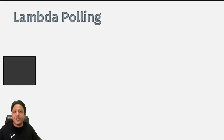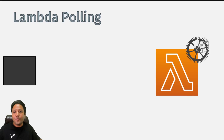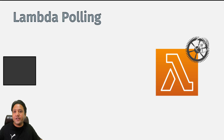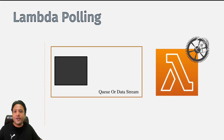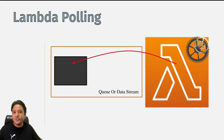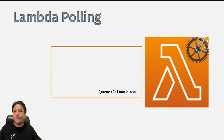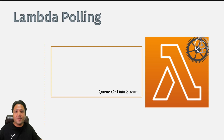In the case of Lambda polling, let's say we have data — it can be a single data or a batch of data — and we want Lambda to process this data. Because the data is going to be in continuous format, it is either going to go to a queue or it will be part of a data stream. Lambda internally is going to continuously pull this queue or data stream, and whenever data arrives Lambda is going to process it. This is why this method of invocation is known as Lambda polling.